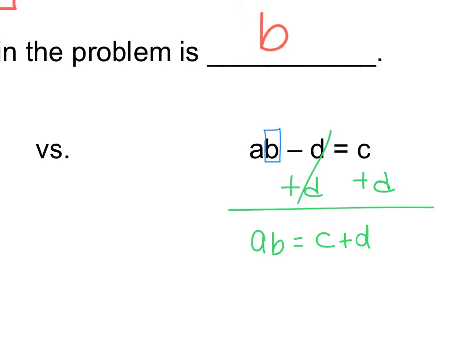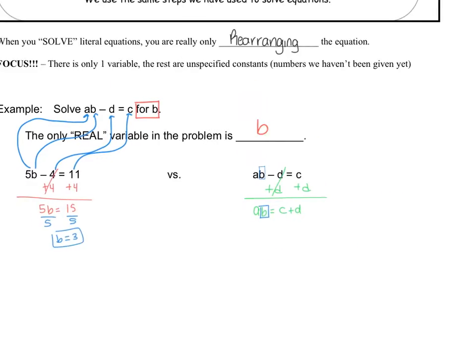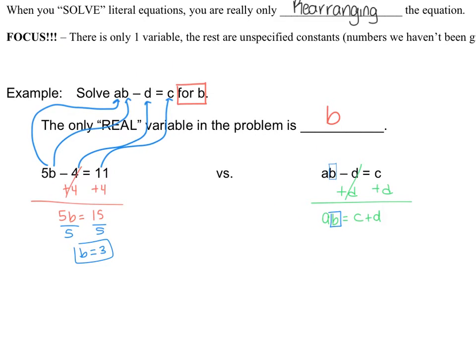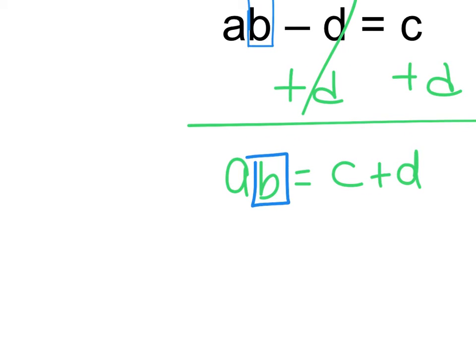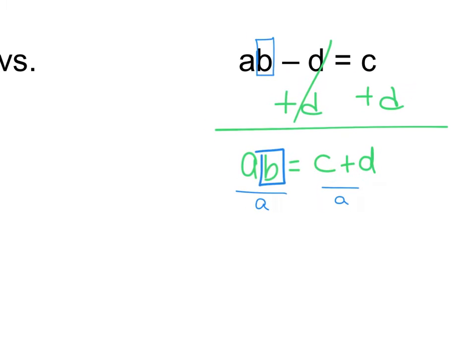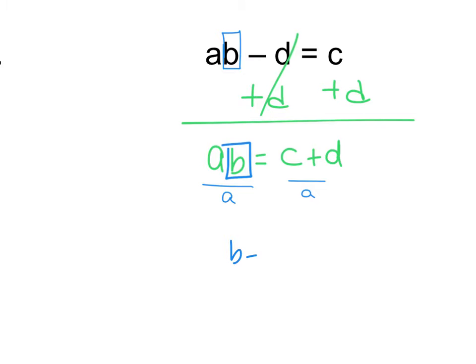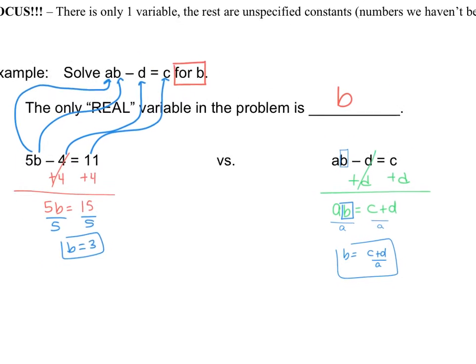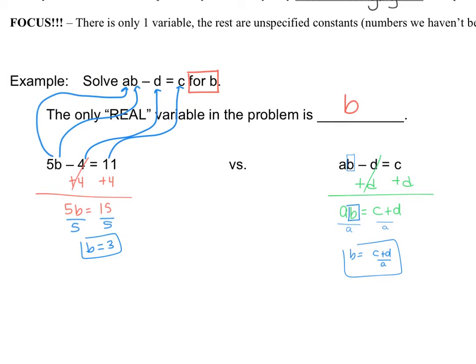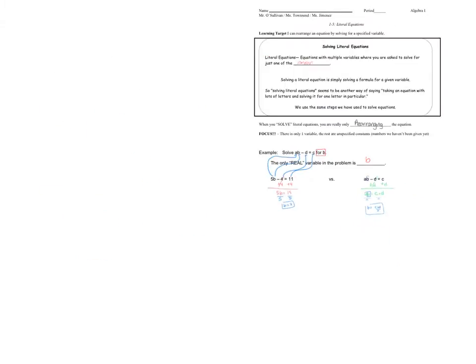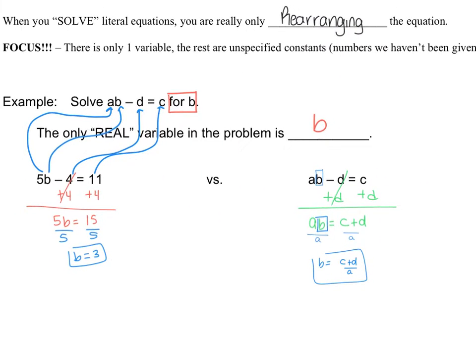And again, I want to get B by itself. So I have to look. And before I divide it by 5, here I'm going to divide by A. So I get B equals C plus D over A as your final answer. So your goal is to basically just get your variable by itself. Again, this is a very challenging skill, so please don't be frustrated if you don't get it right away. I promise you, you will get it soon.